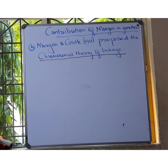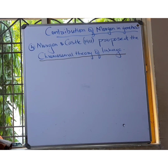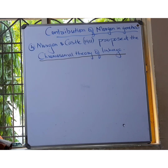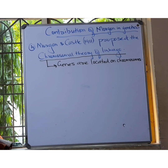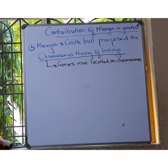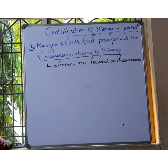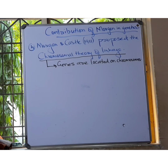Contribution number four: Morgan and Castle together proposed the chromosomal theory of linkage. According to the chromosomal theory of linkage, genes are located on the chromosome in a linear fashion.